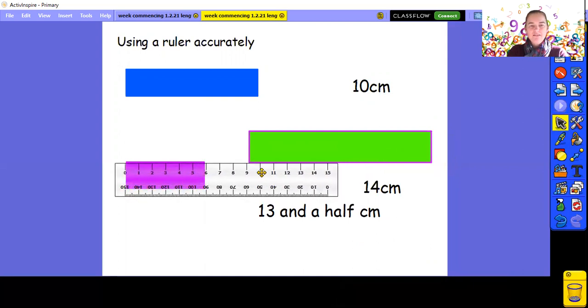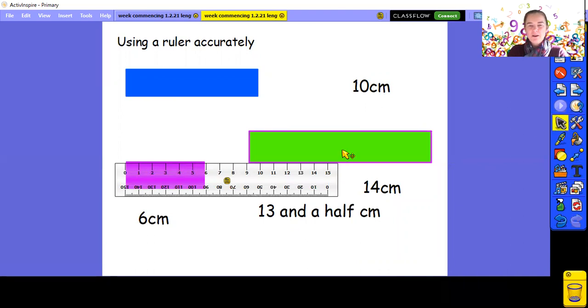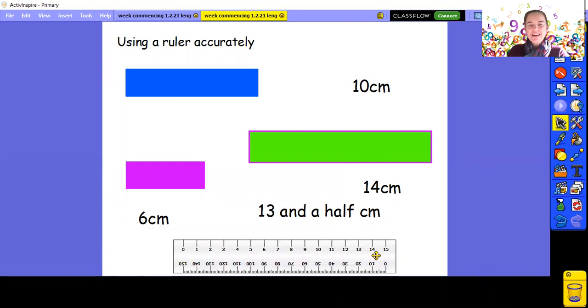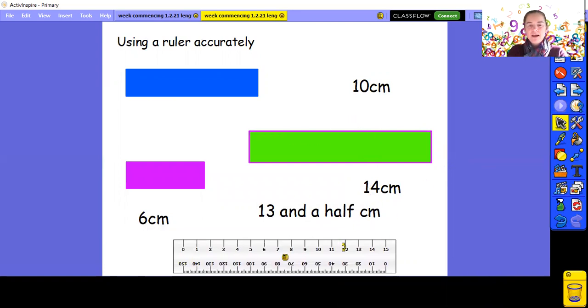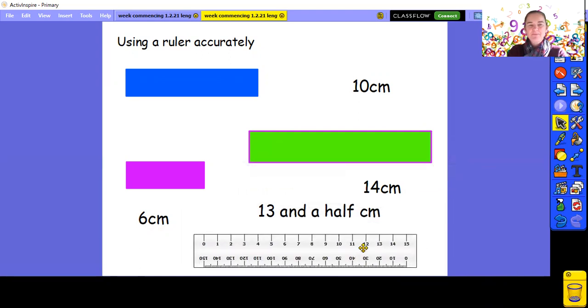Let's have a look at our purple piece of paper. I'm going to start on zero. And it's closest to the number six. So I'm going to say that my purple piece of paper is six centimetres. So remember, in year two, we are measuring to the nearest centimetre. With my green piece of paper, it was actually halfway between the 13 and the 14. In fact, it's almost, I would say it's just over halfway. So I said it was closest to 14 centimetres.